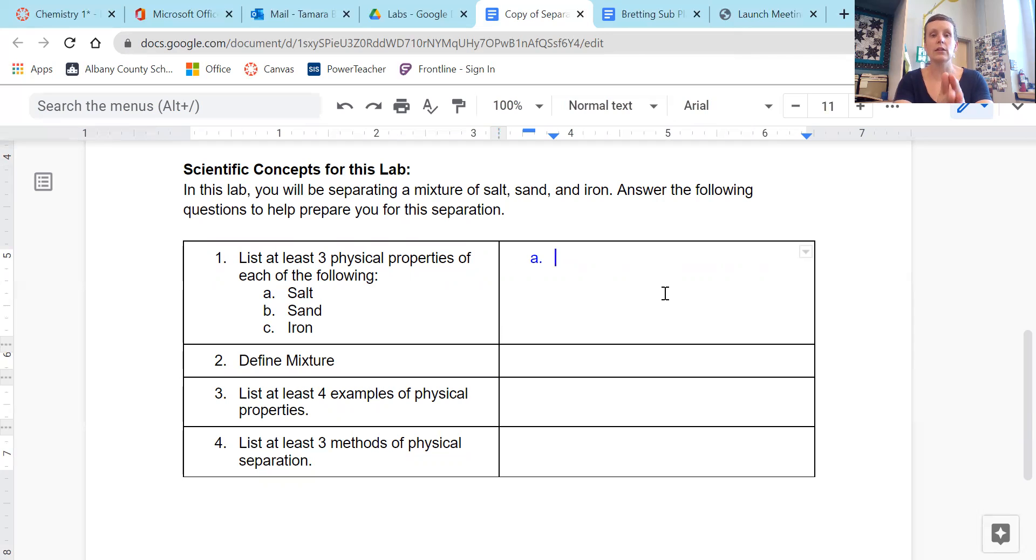Well, first of all, what does it look like? That's the easiest physical property to answer. Hopefully you're telling me it's white and it's solid. When you look at it, you can see it. It's solid. It's not flowing like a gas or liquid would be.